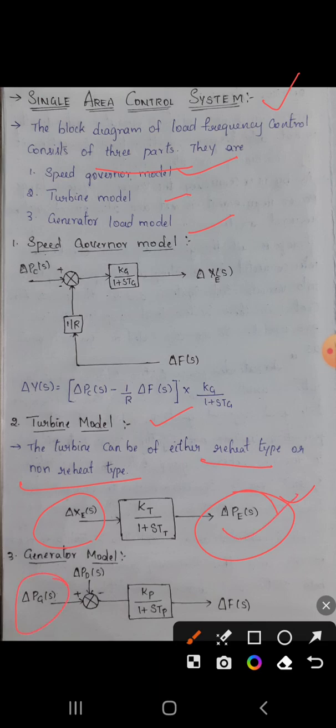The output from the turbine goes to the generator load. We mentioned Pc but we can also mention it as Pe. Now in the generator model, the final output is delta f(s), and the input is delta Pe(s).